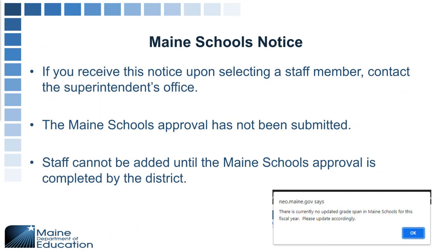If you're getting a notice about Maine Schools — a notice that there's no currently updated grade span in Maine Schools — that is likely because your Maine Schools has not been approved. If you're having any issues with that, please make sure Maine Schools is in an approved status. That is another module to keep in mind as you work through this. If you're having issues, please reach out to your superintendent to get it updated.